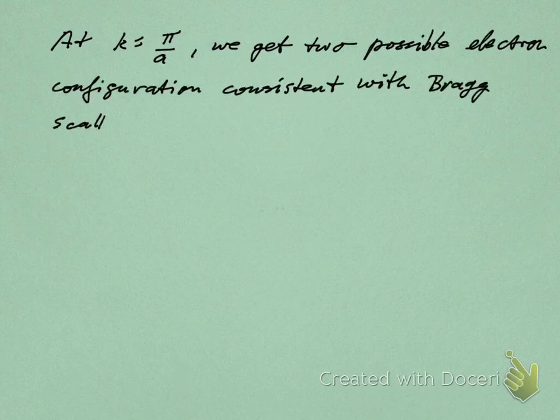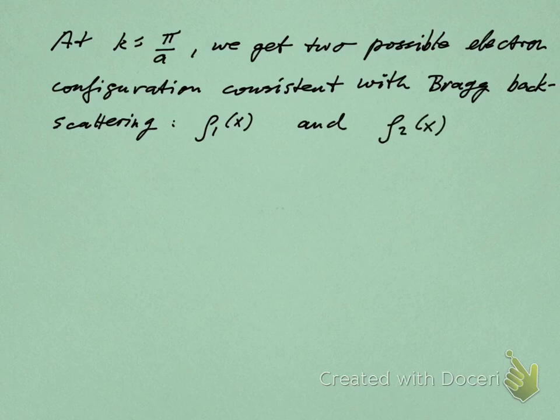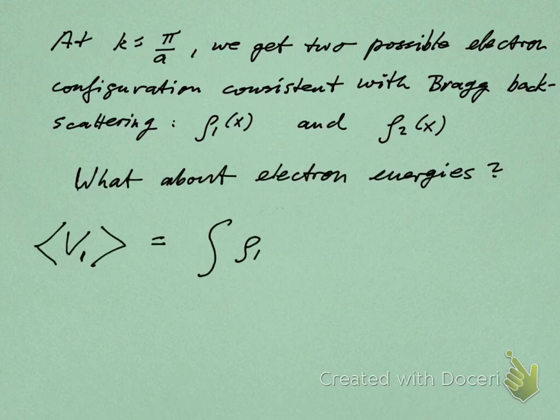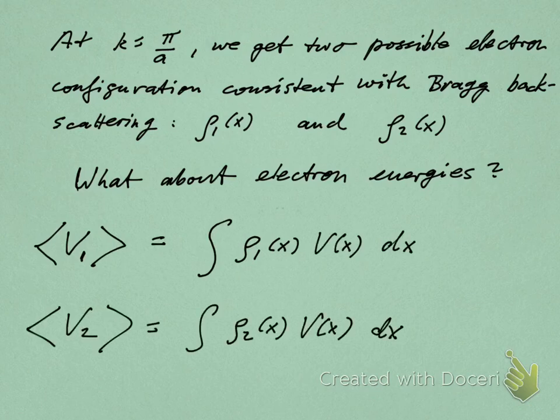So again, just to summarize here, we get these two possible electron configurations that are both consistent with the Bragg condition for back scattering, for reflection if you will. ψ₁, sorry, ρ₁(x) and ρ₂(x)—rho here now is the probability density. That's my new symbol for probability density, so I don't always have to write ψ* ψ. I'm just going to call it rho, density of the electron, electron density if you will. So that's what ρ now is going to stand for. And so now we can ask: what about the electron energies? We're going to try to become a little bit more quantitative now. We'd like to evaluate the potential energy of an electron that is in state one or state A versus an electron that is in state two or state B.